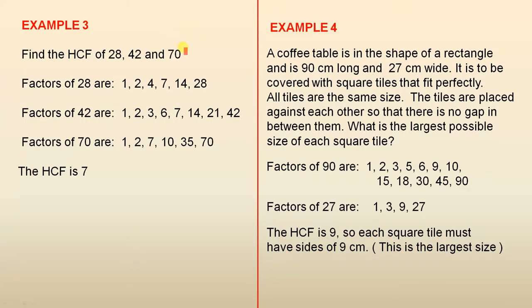Example 3. Find the highest common factor of 28, 42 and 70. Factors of 28, factors of 42 and the factors of 70. Now we notice here that we have a 7 there, and there, and there, so that is the highest number that appears in the three lists. So that is the highest common factor.